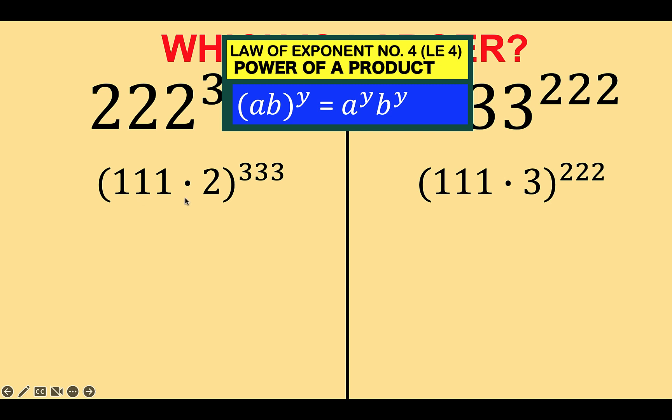This power of a product can be turned into a form similar to the right side. So the first factor raised to exponent 333 times the second factor raised to the same exponent. At the right side, we also do the same. This factor raised to 222 and the second factor raised to the same exponent.